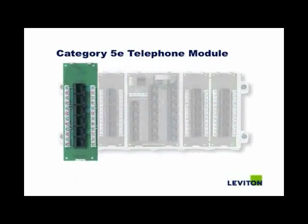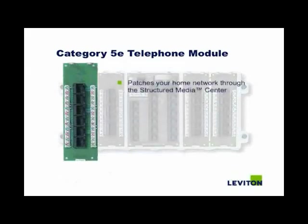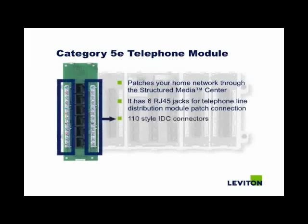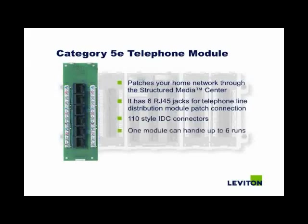This is the Category 5e telephone module. It patches your home network through the structured media center. It has six RJ45 jacks for telephone line distribution module patch connections, with each jack corresponding to a 110-style IDC connector. One module can handle up to six runs and can be daisy-chained for multiple modules.